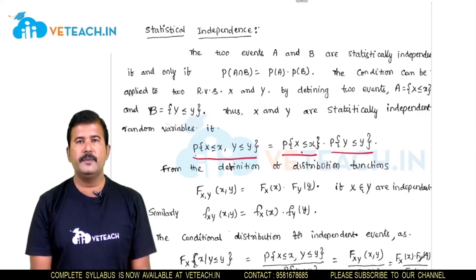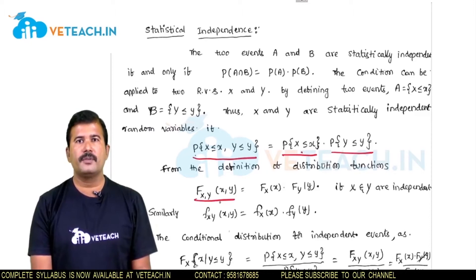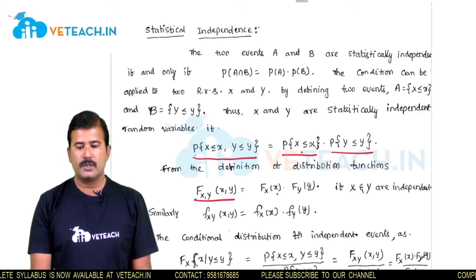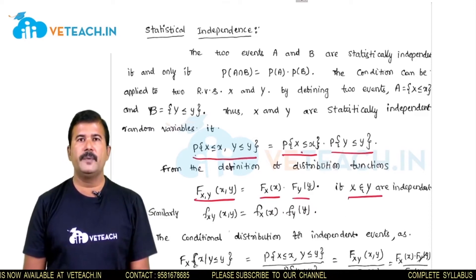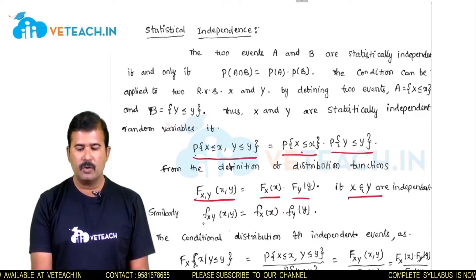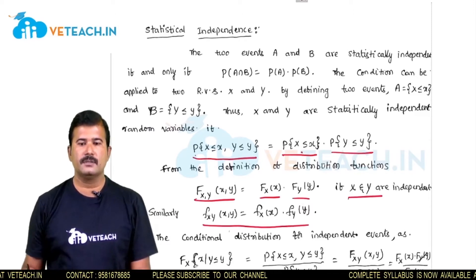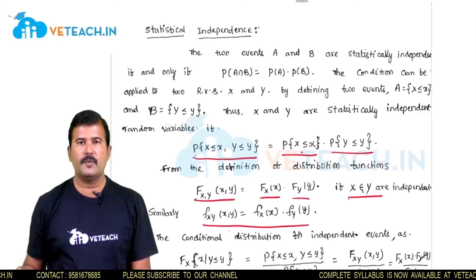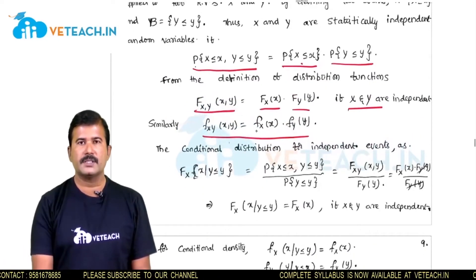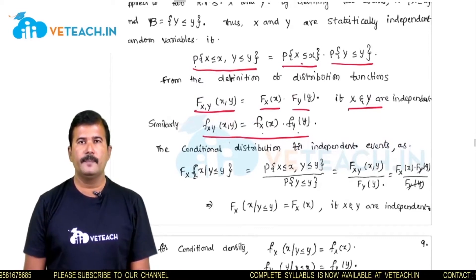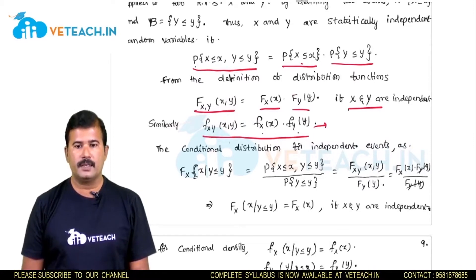This probability of the joint event is nothing but the joint distribution function. So if the joint distribution function of x and y equals the product of marginal distribution functions, then x and y are said to be independent. The same condition holds for the density function: the joint density function f(x,y) equals the product of marginal density functions f_x(x) into f_y(y).